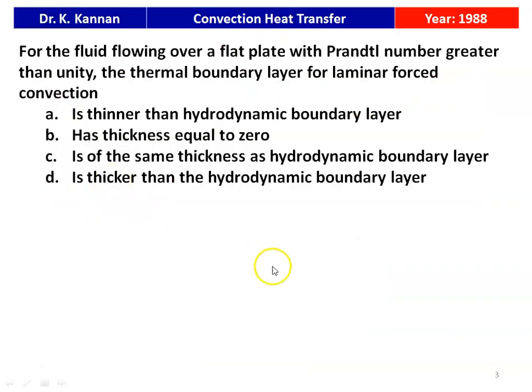The first question from the 1988 question paper: for a fluid flowing over a flat plate with a Prandtl number greater than unity, the thermal boundary layer for laminar forced convection — we have 4 options: is thinner than the hydrodynamic boundary layer; has thickness equal to 0; is of the same thickness as the hydrodynamic boundary layer; is thicker than the hydrodynamic boundary layer.